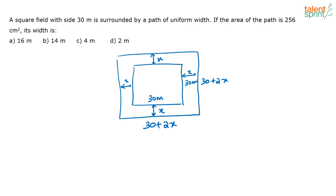Now if the area of the path is 256 centimeters squared, its width is dash. This area, this shaded region area is given as 256. You have to find out the value of x.